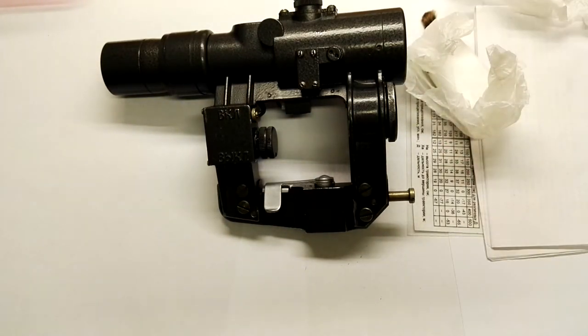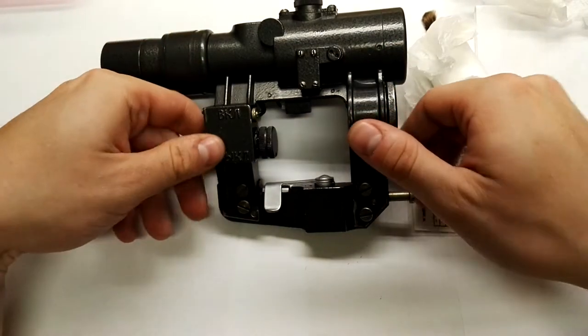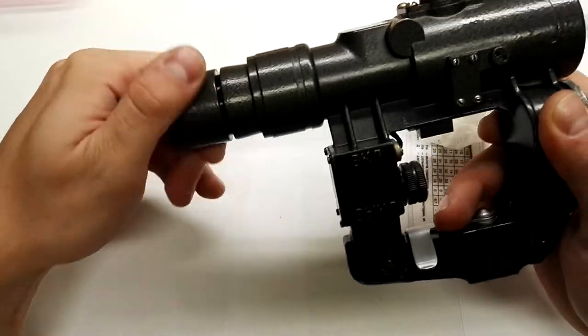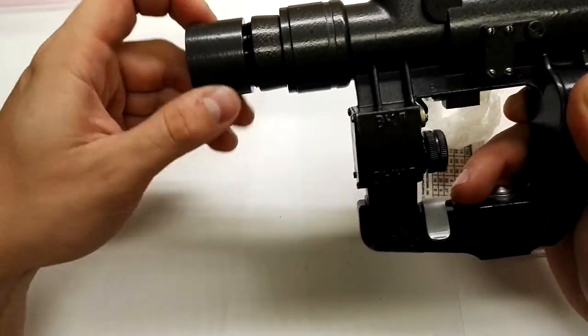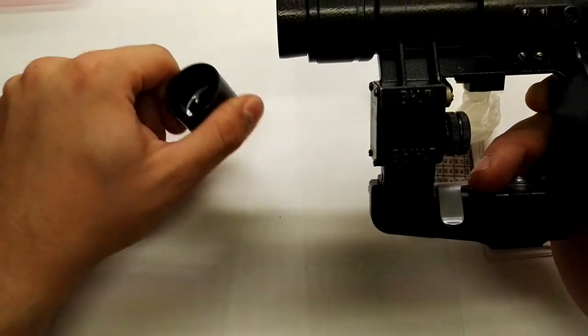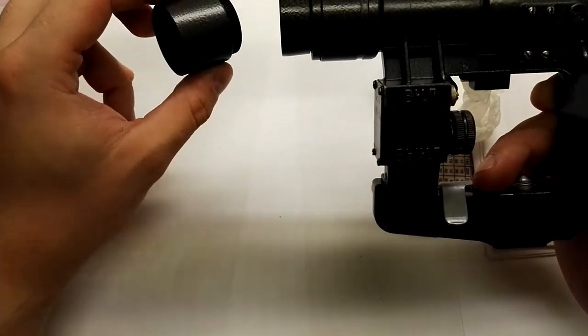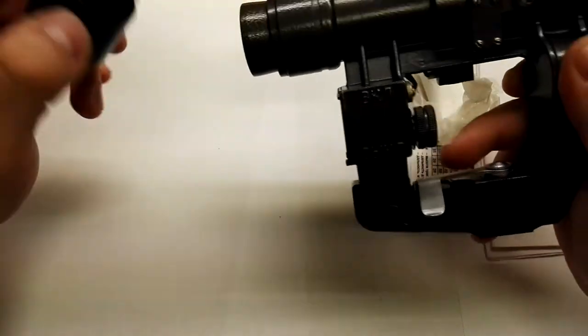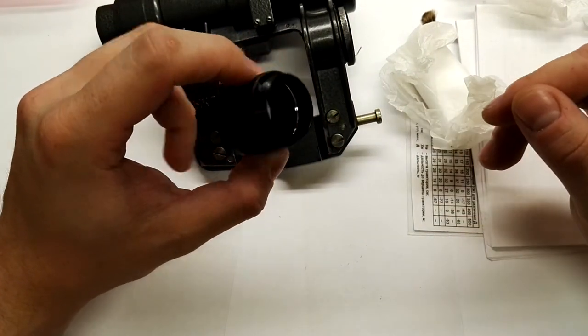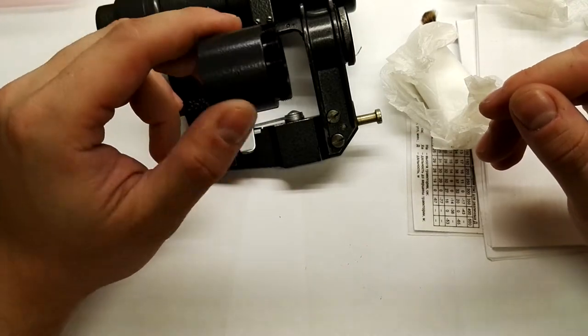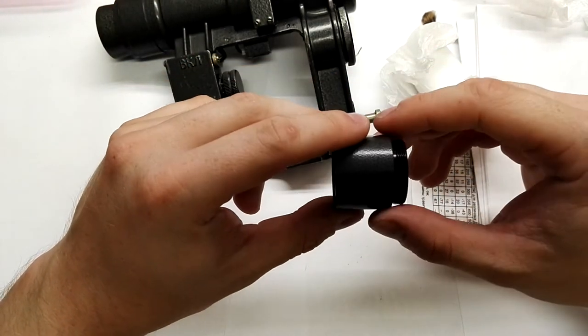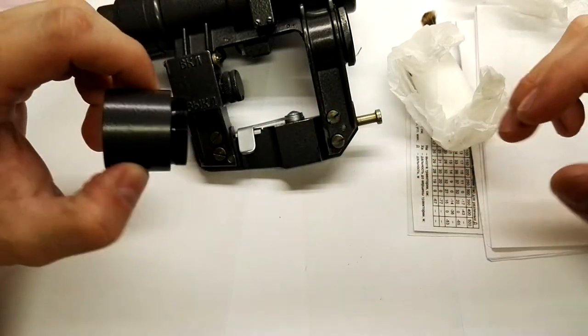Basically you will get the scope and this shade attachment. When the sun is lighting your scope, this will make additional shade. It's not a kill flash, but something like on the SVD type of scope where you can move it forward for a longer shade.